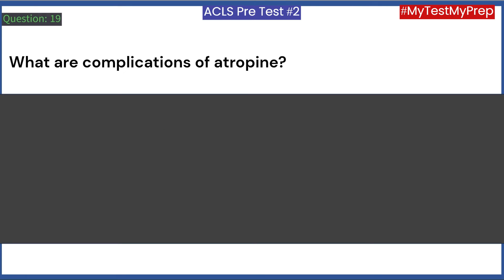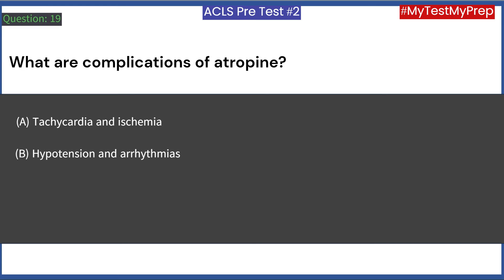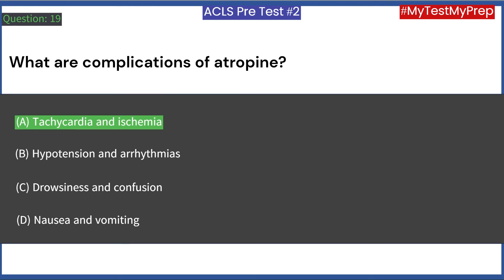What are complications of atropine? A. Tachycardia and ischemia. B. Hypotension and arrhythmias. C. Drowsiness and confusion. D. Nausea and vomiting. Answer: A. Tachycardia and ischemia.